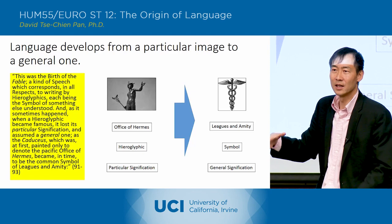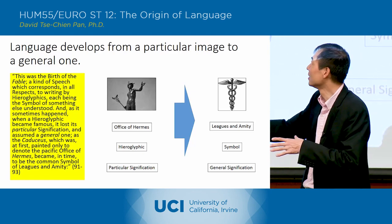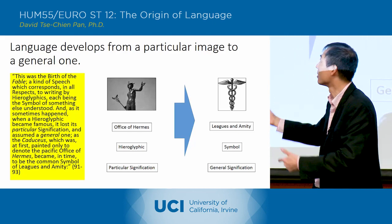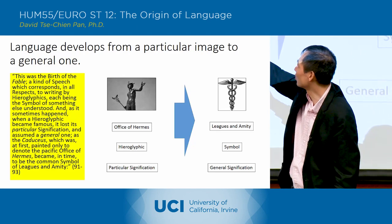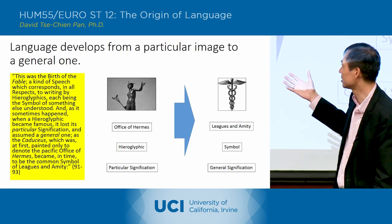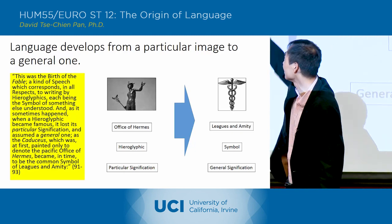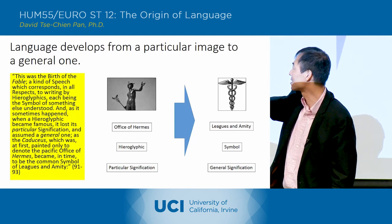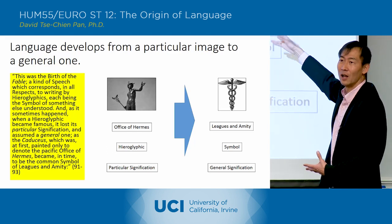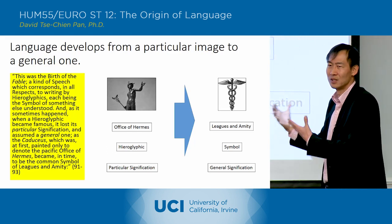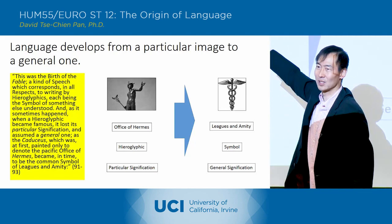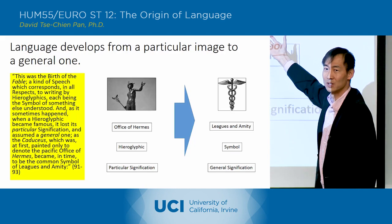Both the fable and the hieroglyphic is a symbol of something else. The fable is telling us a story about the Brambles, but it's actually symbolizing the story about people choosing a king. As it sometimes happened, when a hieroglyphic became famous, it lost its particular signification and assumed a general one — as the caduceus, which was at first painted only to denote the specific office of Hermes, became in time the common symbol of leagues and amity.